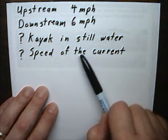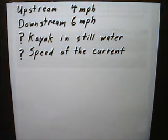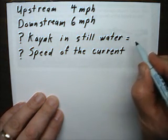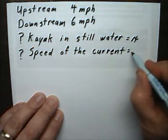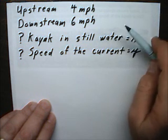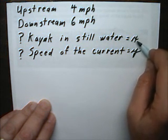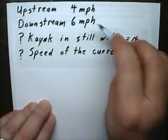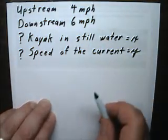Similarly, going upstream, you subtract the speed of the current. I'll define some variables here: let the speed of the kayak in stillwater be x, and the speed of the current be y. I'm going to take the kayak's stillwater speed and add y to get the downstream speed, then subtract the speed of the current to get the upstream speed.